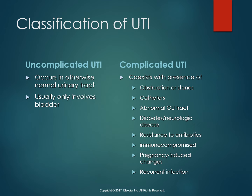We have a couple different classifications of UTI. An uncomplicated UTI involves an otherwise normal urinary tract and usually only involves cystitis, or inflammation of the bladder. A complicated UTI has comorbidity — such as obstruction or stones causing stasis, catheters, instrumentation, underlying health conditions like diabetes, antibiotic resistance, or pregnancy — because of the immunocompromised nature of pregnancy.